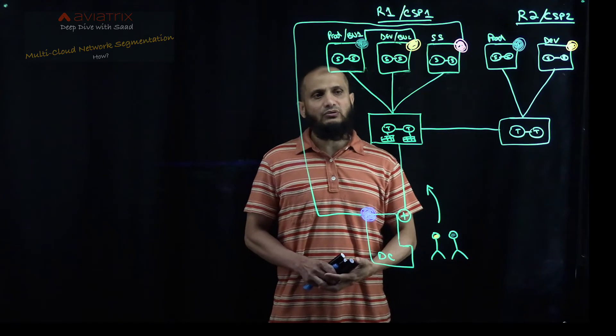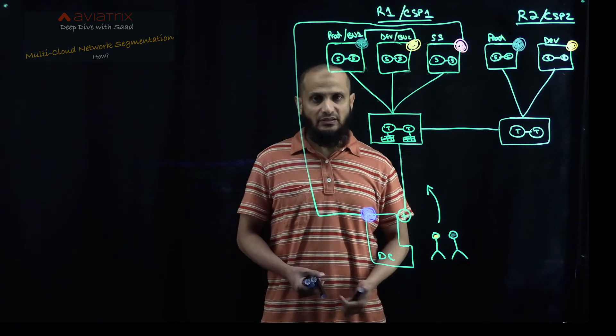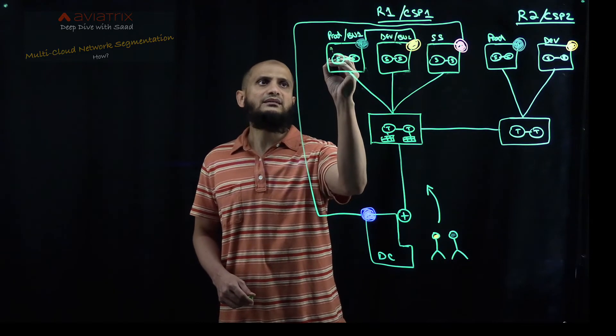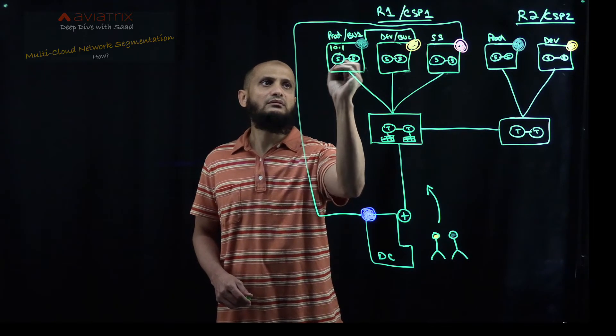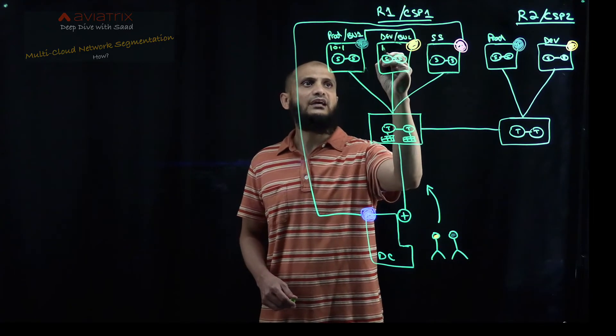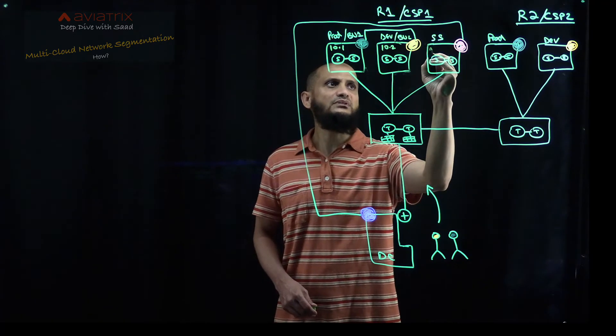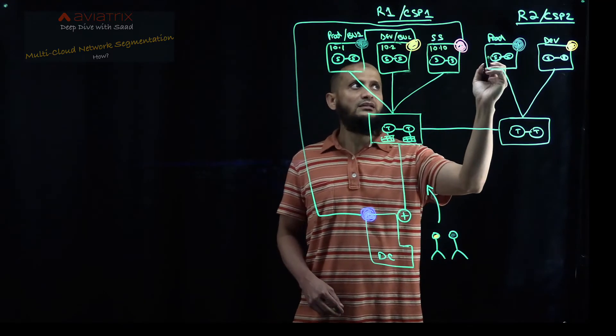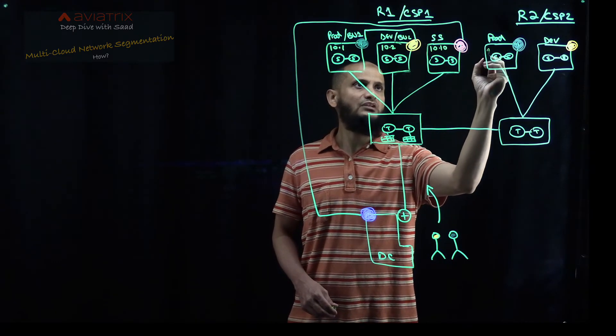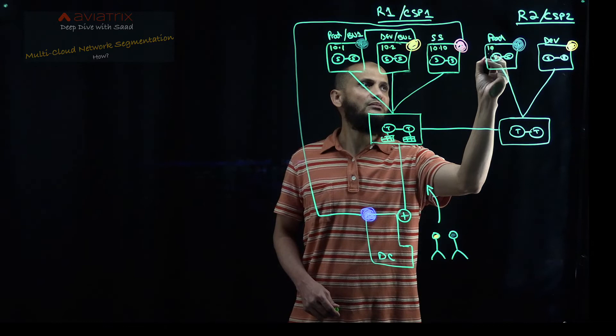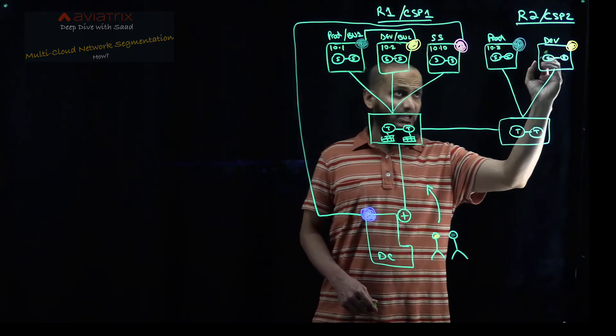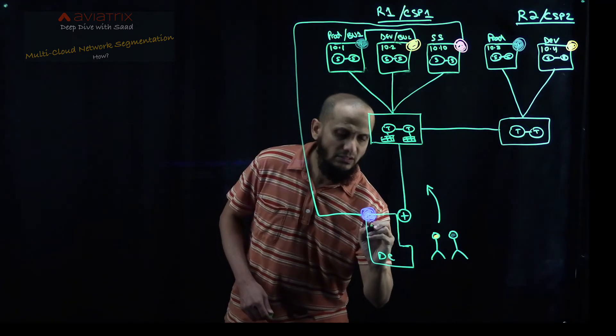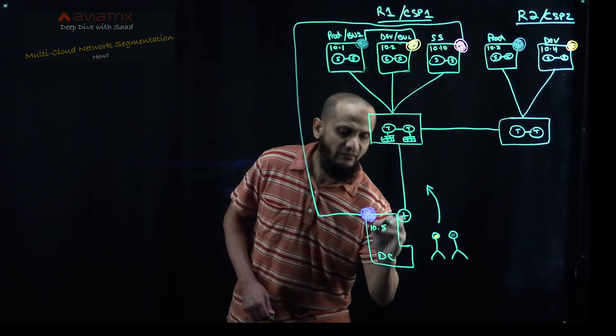Okay. Now let's talk about how Aviatrix is doing it. Let's drill into it. All right. So let's say this prod is 10.1, dev 10.2, shared service is 10.10, the prod in the different CSP region is 10.3, and dev again is 10.4. Your on-prem environment is 10.5.